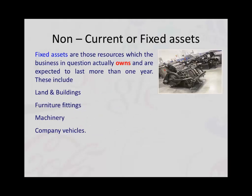So what is a non-current or fixed asset? A fixed asset or non-current asset is a resource that the business will need to be able to run their company. The category of a non-current asset is applied to any resource that a business expects to own for more than one year.